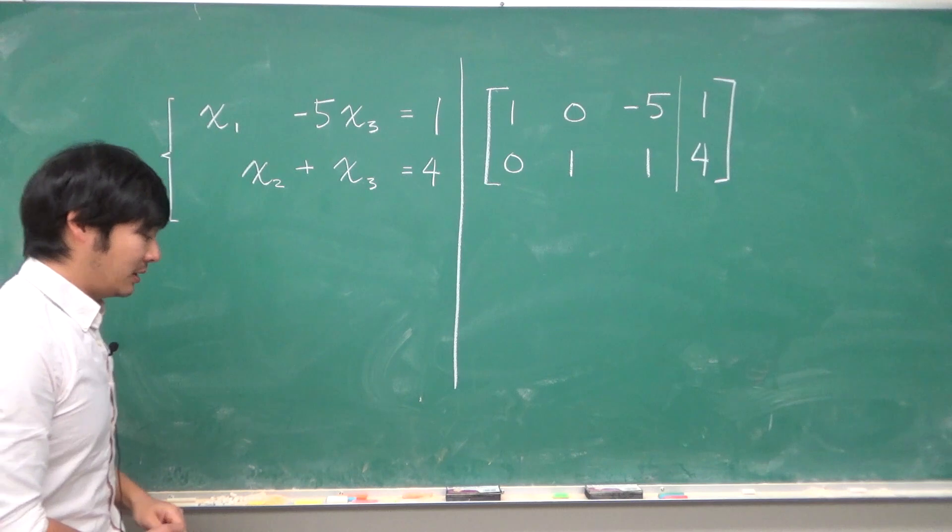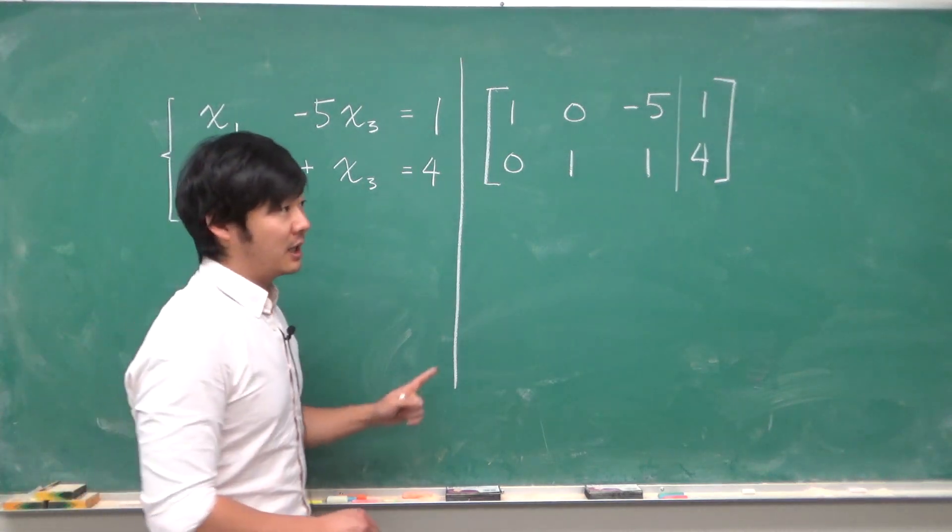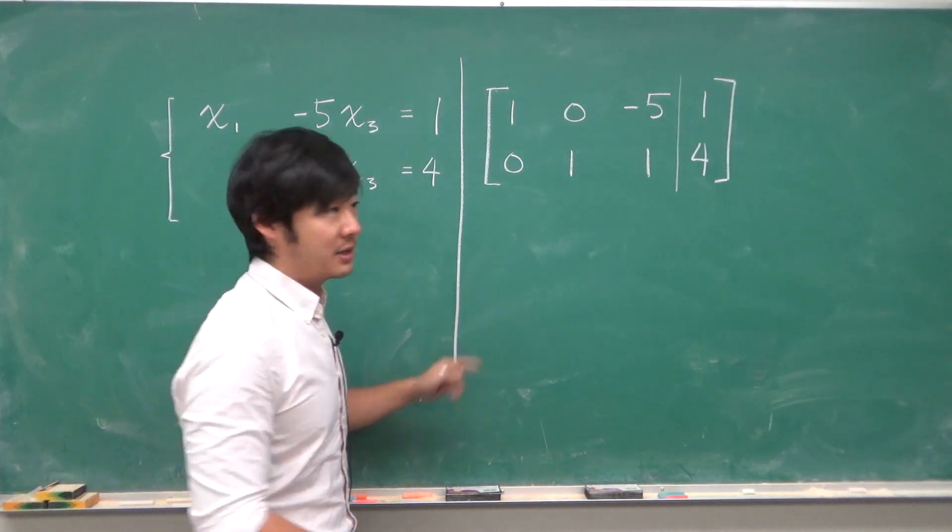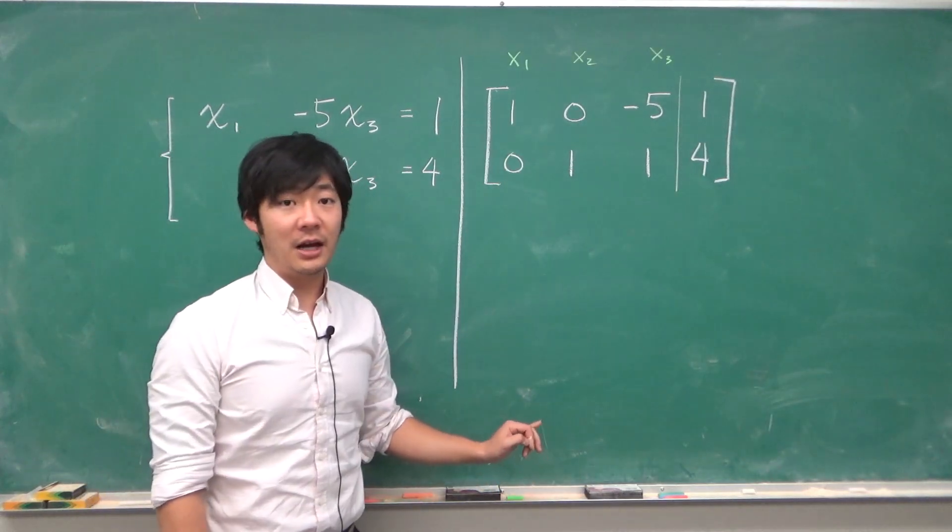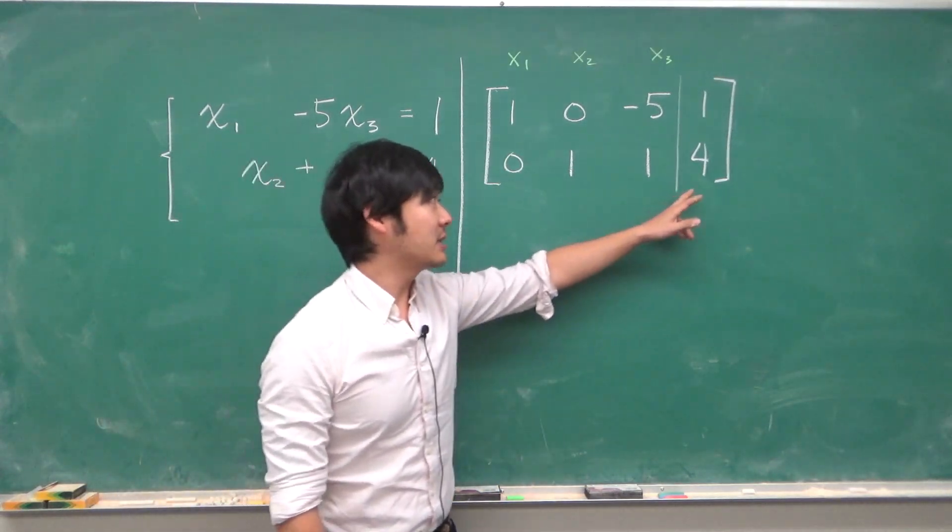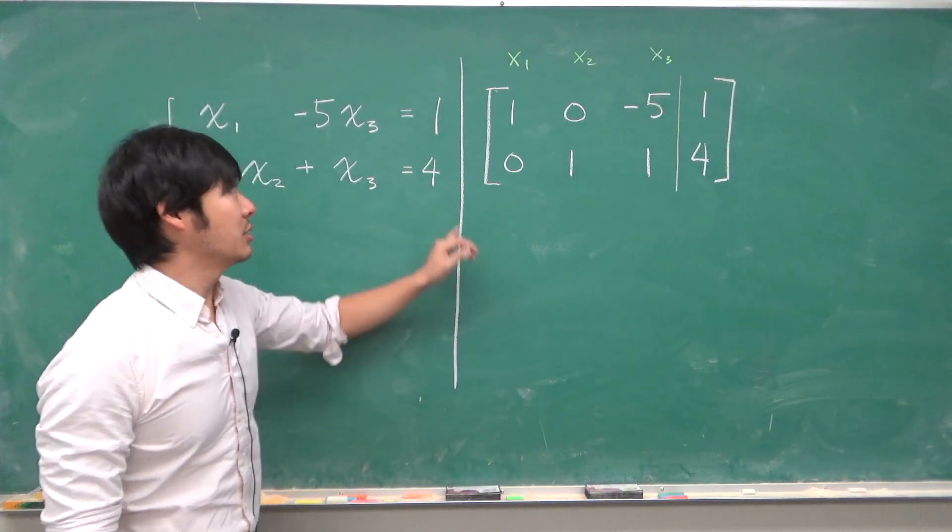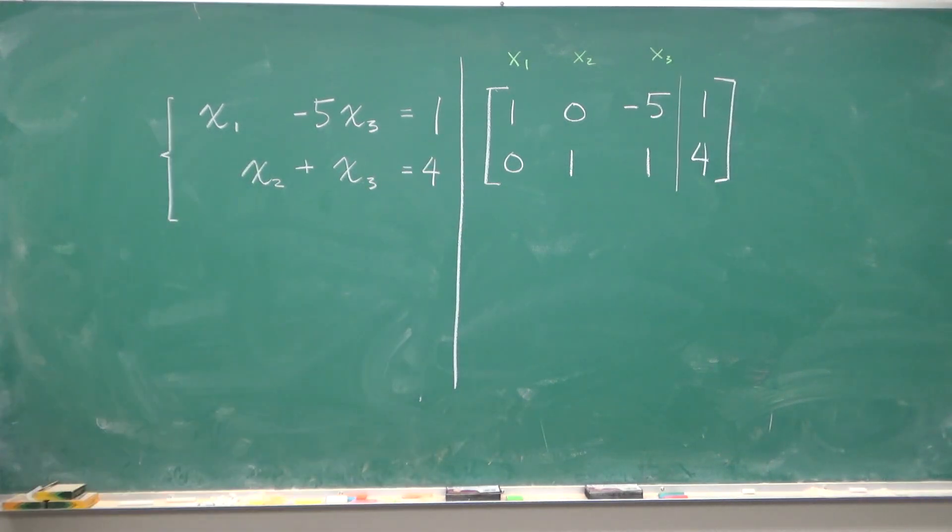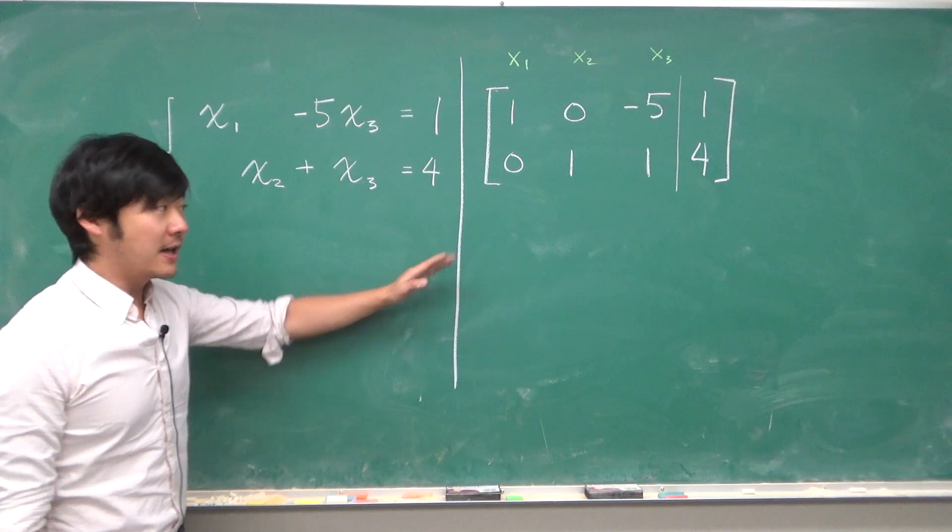To make it more clear, let me write down the variables that each column corresponds to. In an augmented matrix, the last column corresponds to the constant terms in the equation. This matrix is already in reduced row echelon form.